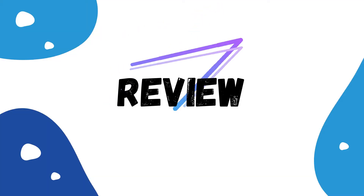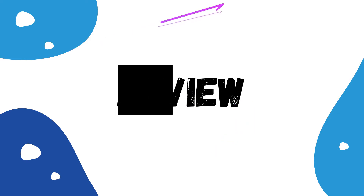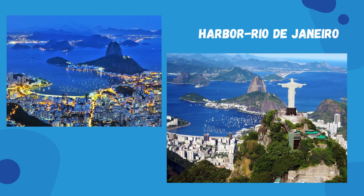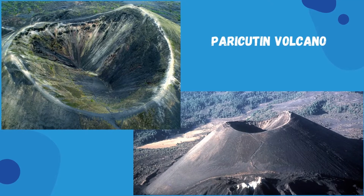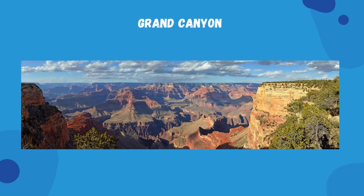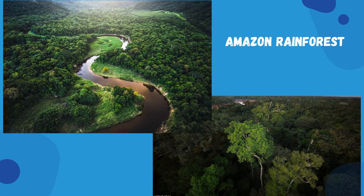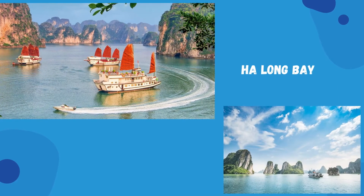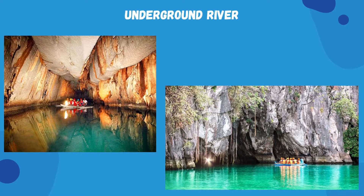Now it's time to review some vocabulary related to the topic so you can have more understanding about the theme. Words of Wonders: Mount Everest, Harbor Rio de Janeiro, Great Barrier Reef, Victoria Falls, Paricutín Volcano, Grand Canyon, Aurora Borealis, Amazon Rain Forest, Ha Long Bay, Iguazú Falls, Jeju Island, Komodo Dragon, Underground River, Table Mountain.